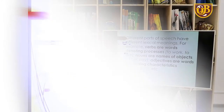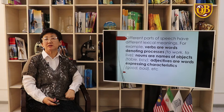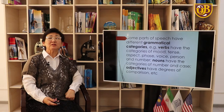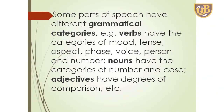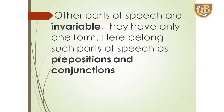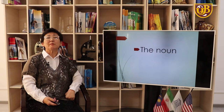Different parts of speech have different lexical meaning. For example, verbs usually denote process — to work, to live. Nouns are names of objects — table, boy. Adjectives are words expressing characteristics. Some parts of speech have different grammatical categories. Verbs have categories of mood, tense, aspect, voice, person, and number. Nouns have the categories of number and case. Adjectives have degrees of comparison. Other parts of speech are invariable — they have only one form, such as prepositions and conjunctions.